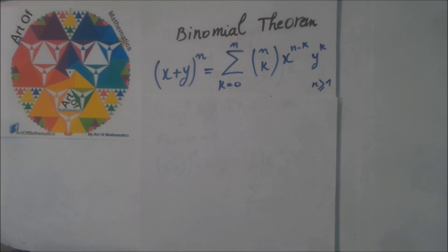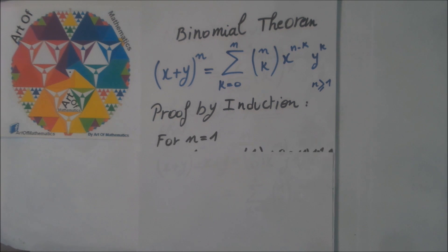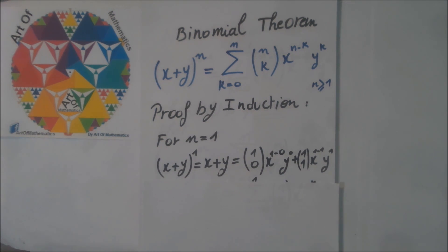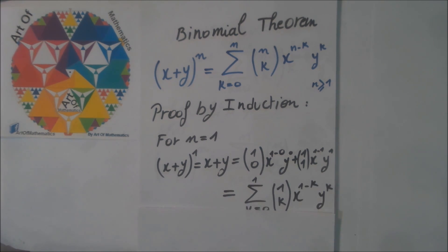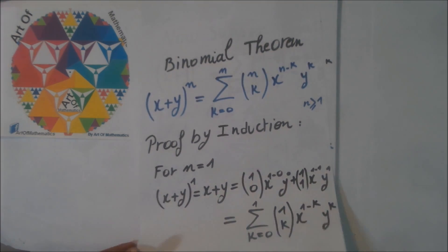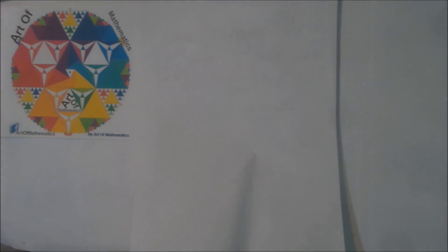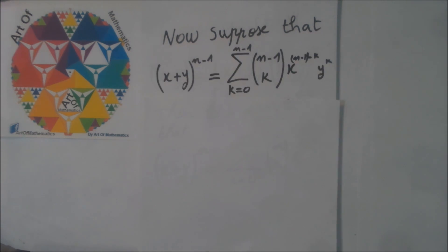This is for n greater or equal to one. The proof is by induction, so we test for n=1. For n=1, (x+y)^1 is equal to x plus y — this is very simple. And this is equal to the sum from k=0 to 1 of this expression, so this holds for n=1.